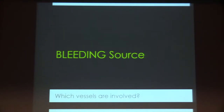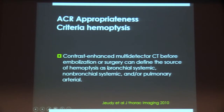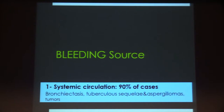The second important objective after identifying the bleeding site and specific CT findings is to determine which vessels are involved. The ACR appropriateness criteria for haemoptysis state that contrast-enhanced multi-detector CT should be performed before embolization to define whether the source of bleeding is the bronchial/systemic arteries, pulmonary arteries, or — very rarely — the aorta.